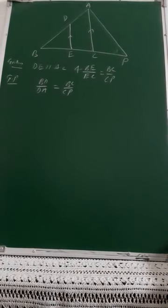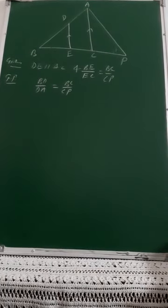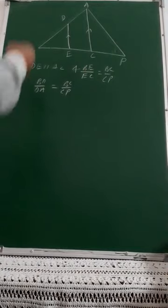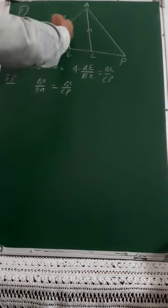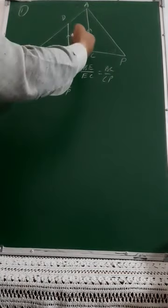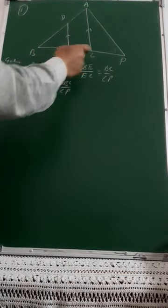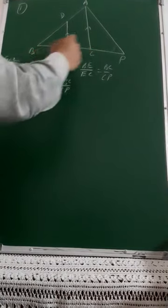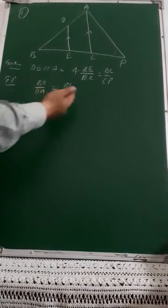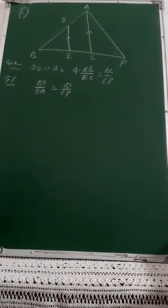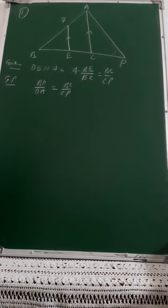Good afternoon. Let us have a remedy of yesterday's test. The first question given had a figure in which DE is parallel to AC, and BE upon EC is equal to BC upon CP. Based on this information, you need to prove BD upon DA is equal to BC upon CP.